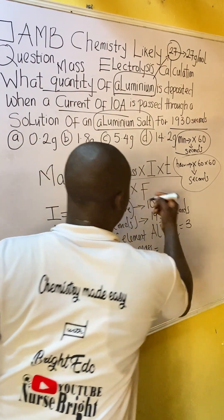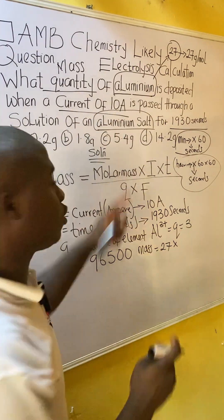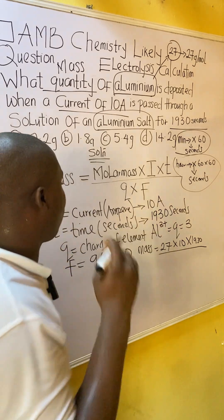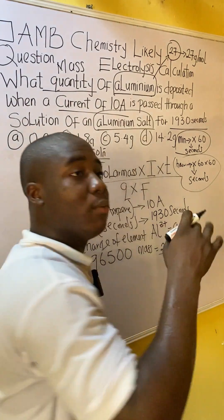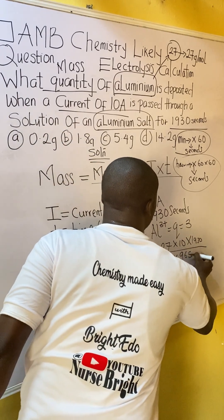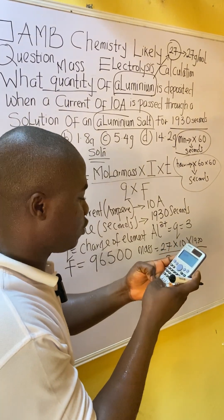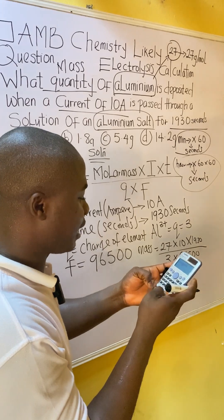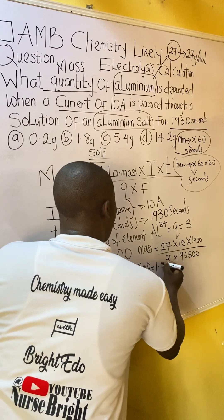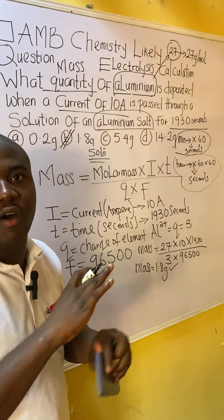So what is the mass of aluminum? Mass = molar mass × I × t ÷ (Q × F) = 27 g/mol × 10 A × 1,930 s ÷ (3 × 96,500 C). Calculating: 27 × 10 × 1,930 divided by 3 × 96,500 gives 1.8 grams. So the mass of aluminum is 1.8 grams, and the answer to the question is option B.